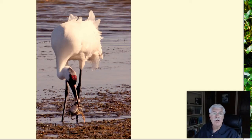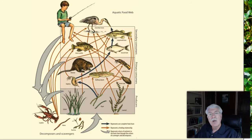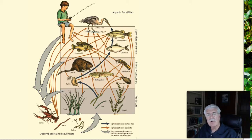For example, zooplankton may eat phytoplankton, gizzard shad may eat zooplankton, and largemouth bass may eat gizzard shad. While such descriptions of energy flow through a community of plants and animals may sound pretty easy to understand, this is only a simplified version of how energy really moves through a community.